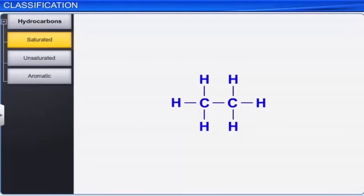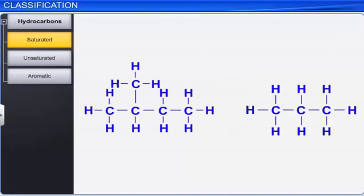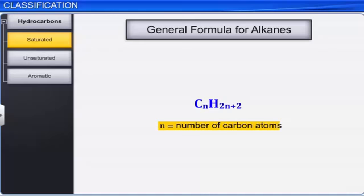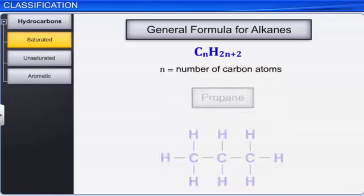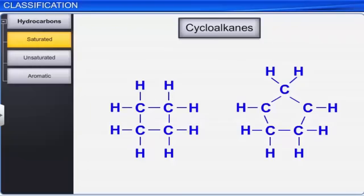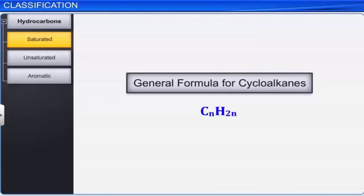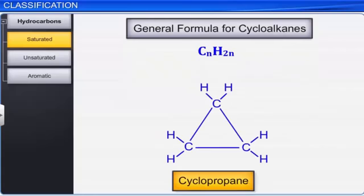Saturated hydrocarbons are hydrocarbons consisting of carbon-to-carbon single bonds. Saturated, open chain, or acyclic hydrocarbons in which carbon atoms are linked by straight or branched chains are called alkanes. The general formula for alkanes is CₙH₂ₙ₊₂, where N equals the number of carbon atoms. For example, propane. Saturated hydrocarbons in which the carbon atoms join together to form a closed chain are called cycloalkanes. The general formula for cycloalkanes is CₙH₂ₙ. For example, cyclopropane.